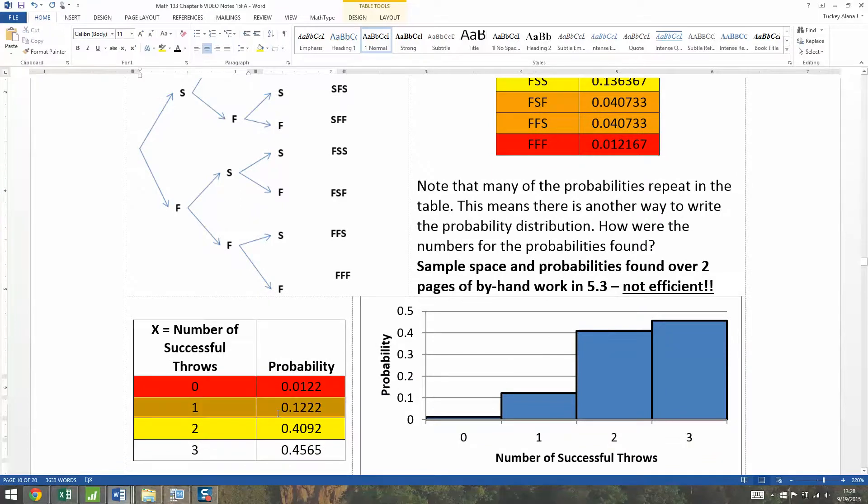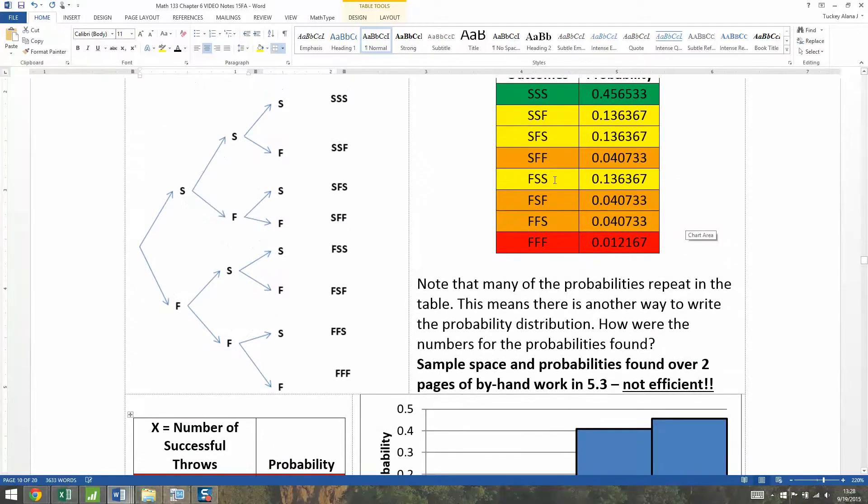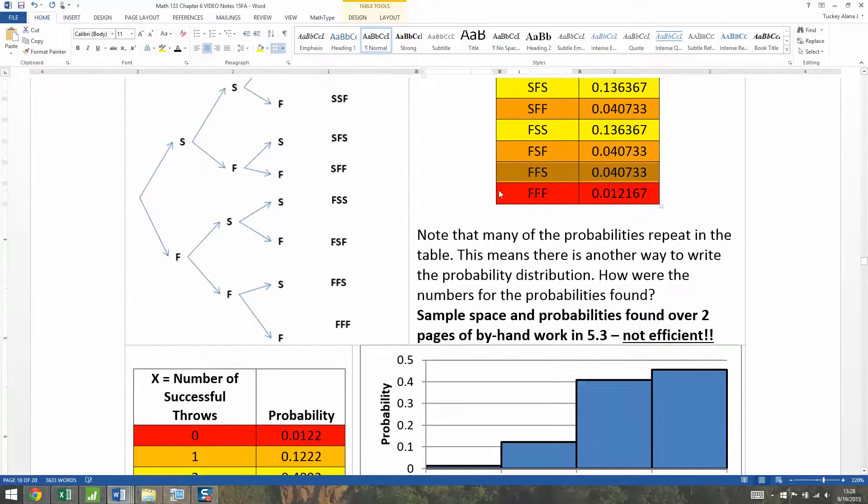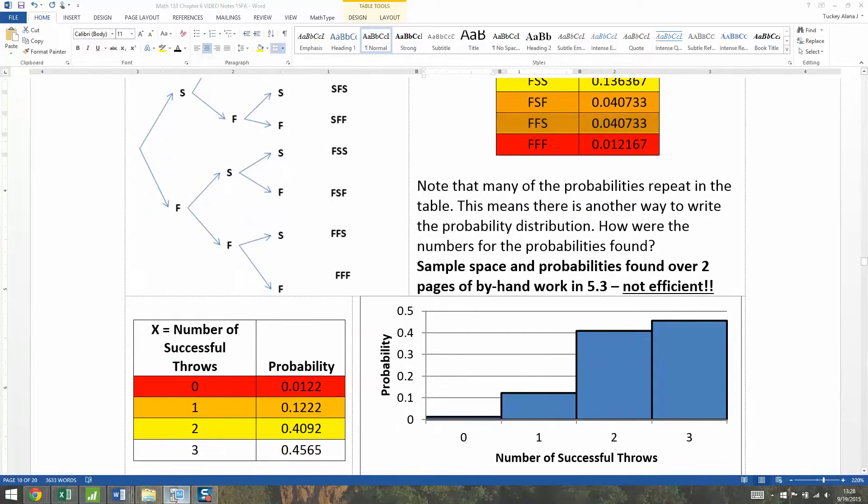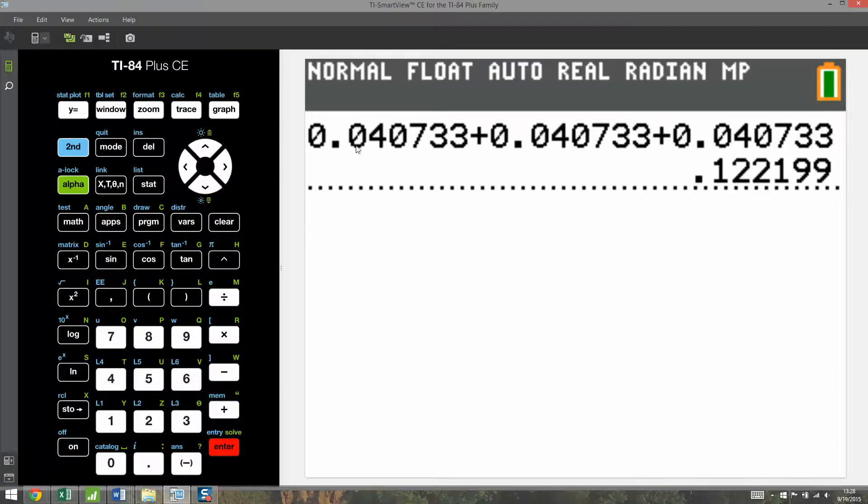One success - well, that happens three different ways in the raw data set. Success, fail, fail. Fail, success, fail. And fail, fail, success. So I'm not going to figure out these three individual probabilities. What I can do, however, is add the three of them up. The three of them together is 0.1222.